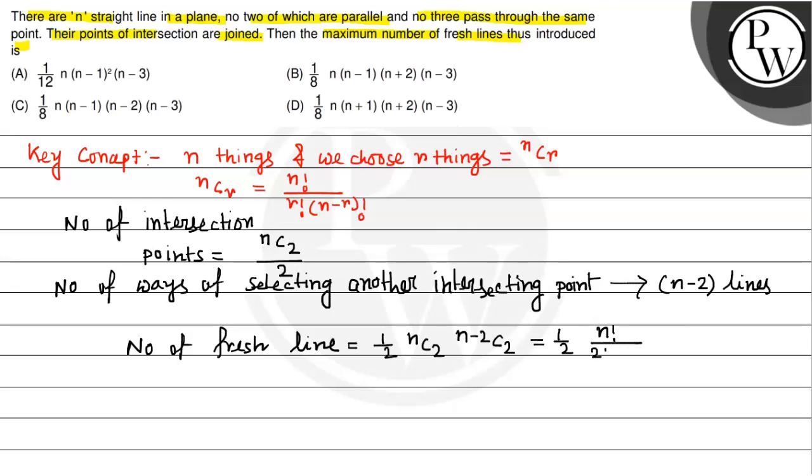n factorial divided by 2 factorial into n minus 2 factorial, multiplied with n minus 2 factorial divided by 2 factorial into n minus 4 factorial.